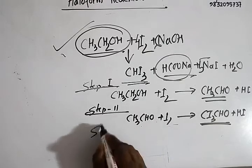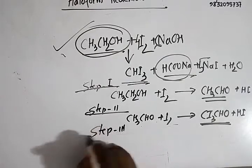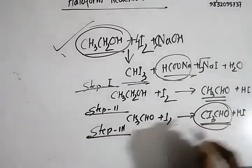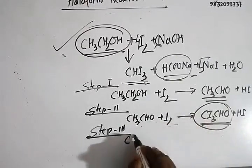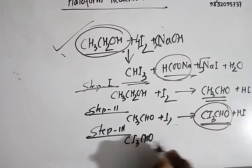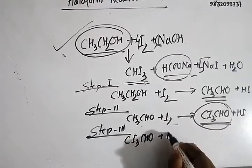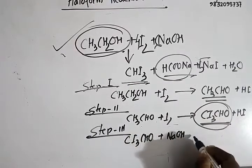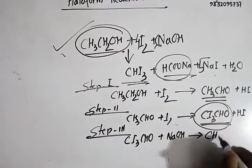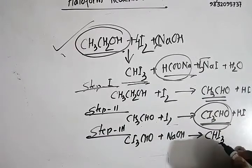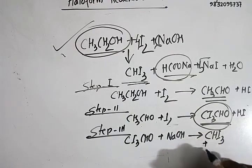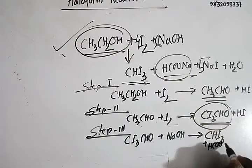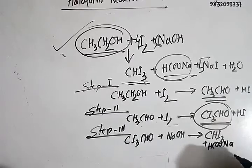In step 3, the triiodo compound triiodoacetaldehyde CI3CHO undergoes hydrolysis in presence of alkaline medium that is NaOH, and we are getting CHI3, the yellow crystalline solid, and along with a salt and the salt is HCOO-Na sodium formate.